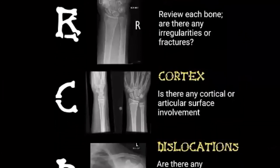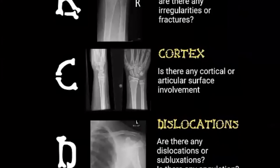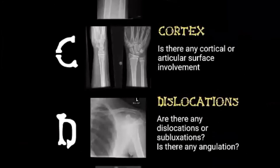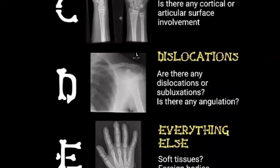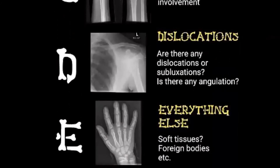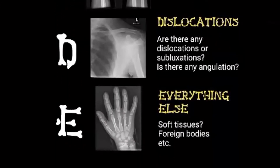So — is it accurate? What do the bones look like? What about the cortex? Are there any dislocations? And what about everything else?